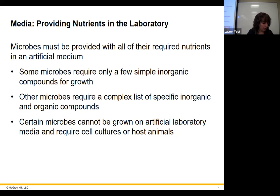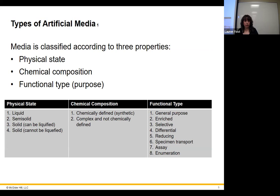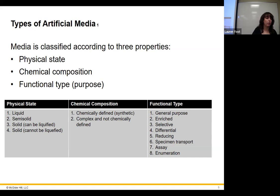Some organisms need specific conditions to grow; some can grow almost anywhere. Media can be liquid, semi-solid, or solid. Agar — which comes from algae — is used to create a solid surface for bacteria to grow on, making it easier to spread organisms out and examine individual colonies.